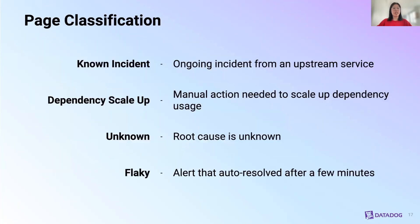The way we classified each page is by four categories. A known incident is whenever we got a page and were informed there was an ongoing incident with an upstream service. A dependency scale-up page meant the action taken was either scaling up one of our dependencies or creating our own incident informing our dependency that they needed to scale up. Our third category is unknown, meaning there was some manual action taken but the root cause is unknown. Lastly, flaky pages are those where the alert auto-resolved after a few minutes and no action was taken.